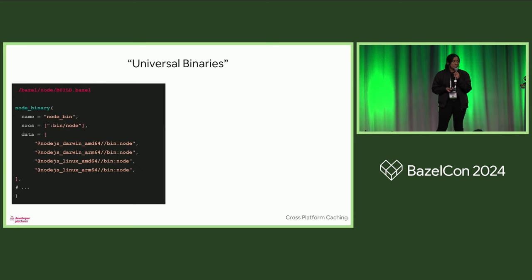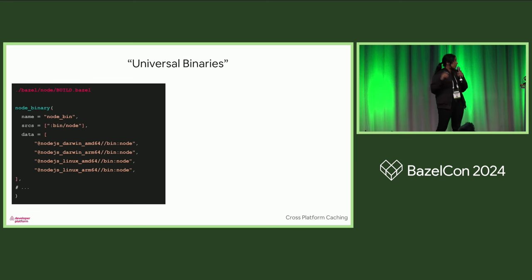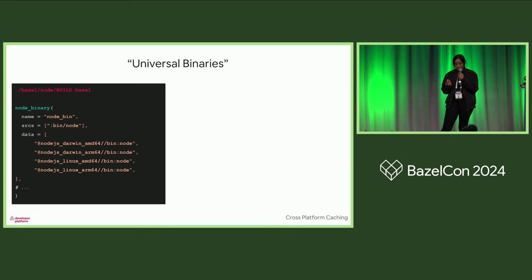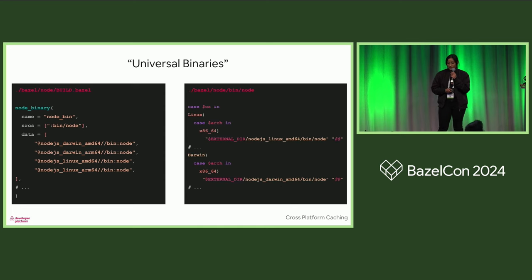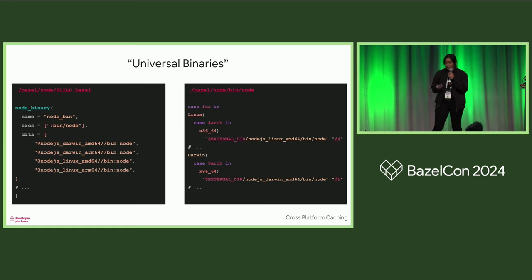This is what I mean by universal binaries. We have a binary here for Node.js, and it's bringing along all kinds of dependencies for Darwin and Linux, for AMD and ARM, and it runs this bin node script. When that script runs, it will pick the right binary depending on the environment that you're in.